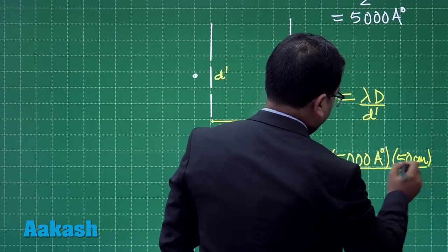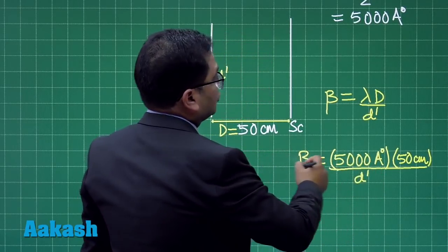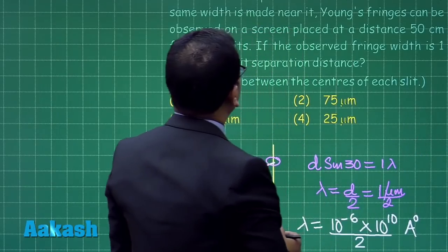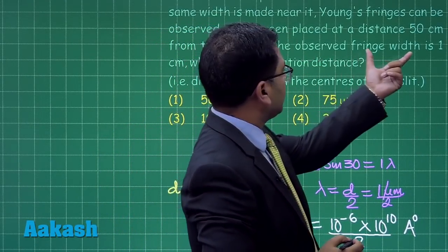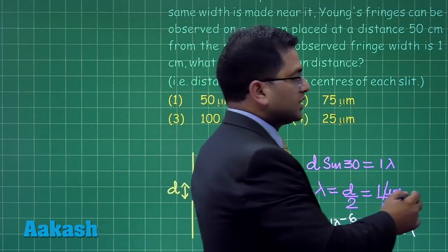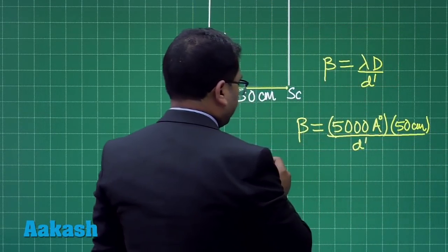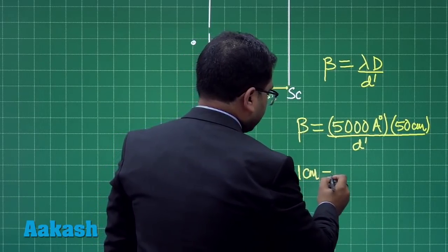Another thing, the value of beta has been given, and the value of beta here is 1 centimeter. So let me put the value of beta which is 1 centimeter. So here I will be getting 1 cm = 5000 angstrom × 50 cm / D'.